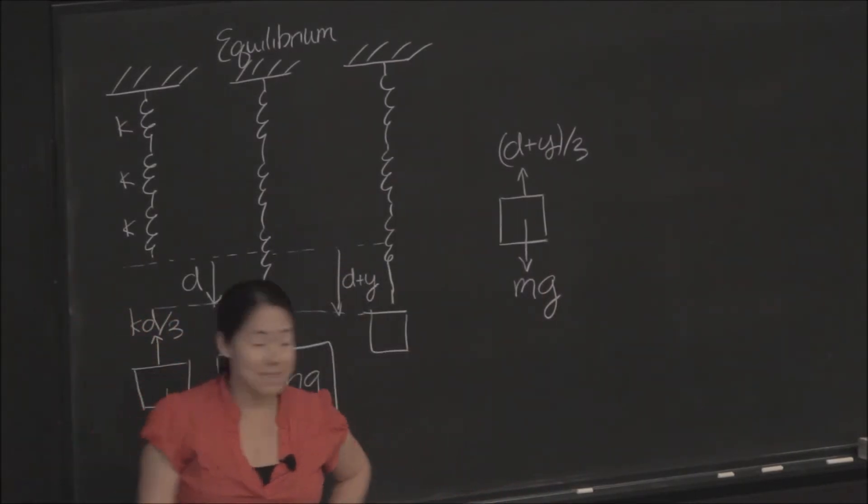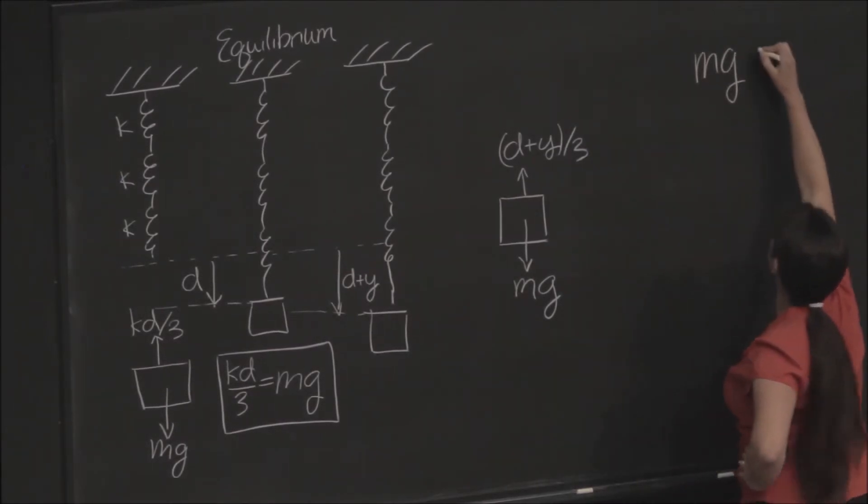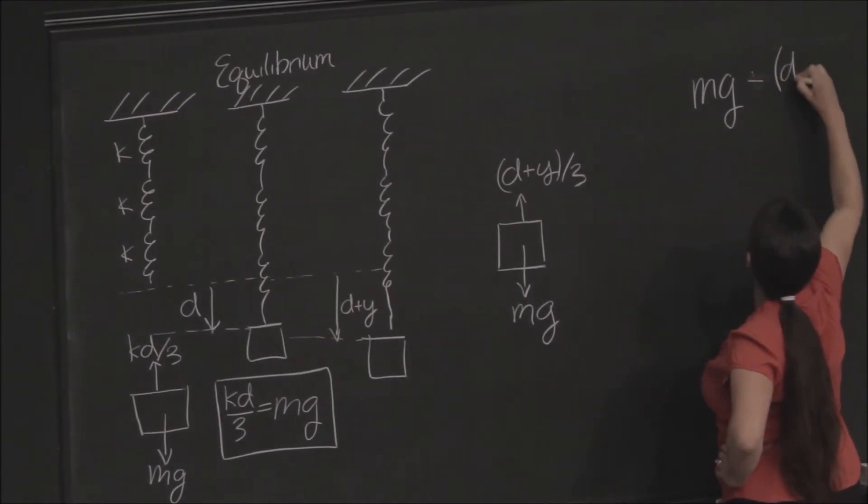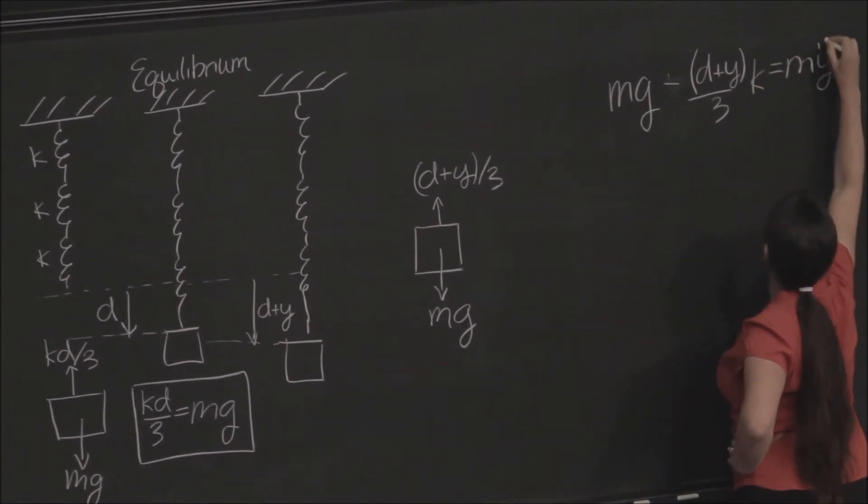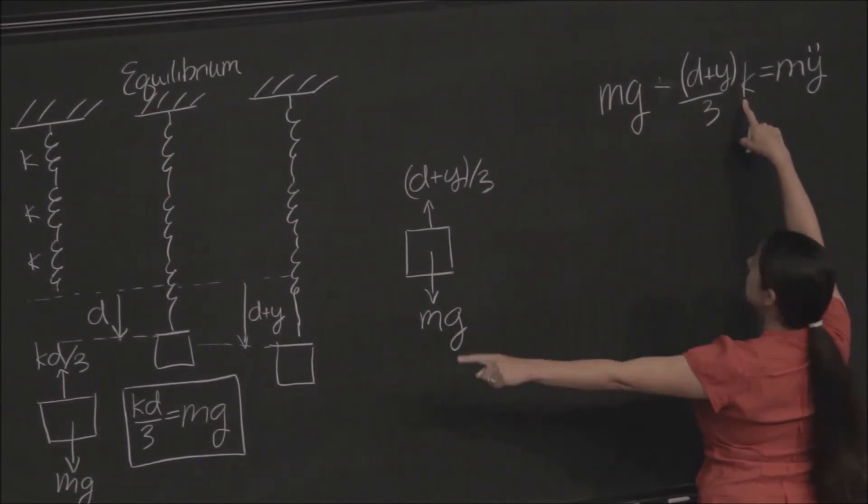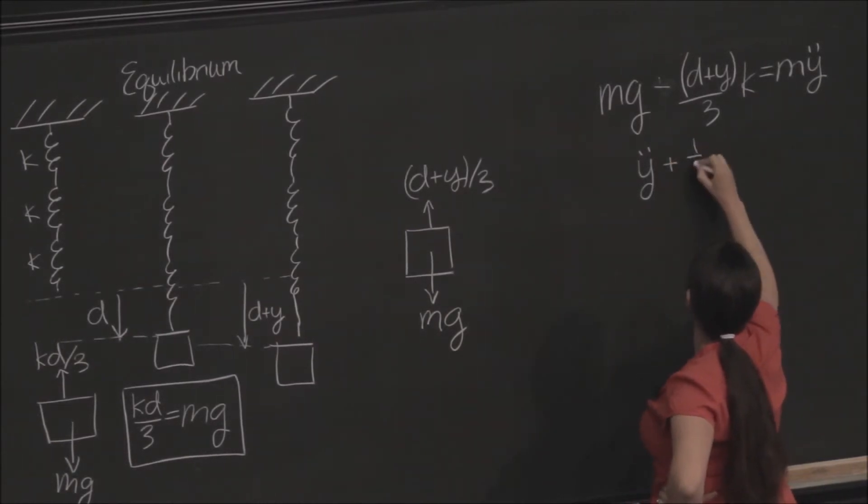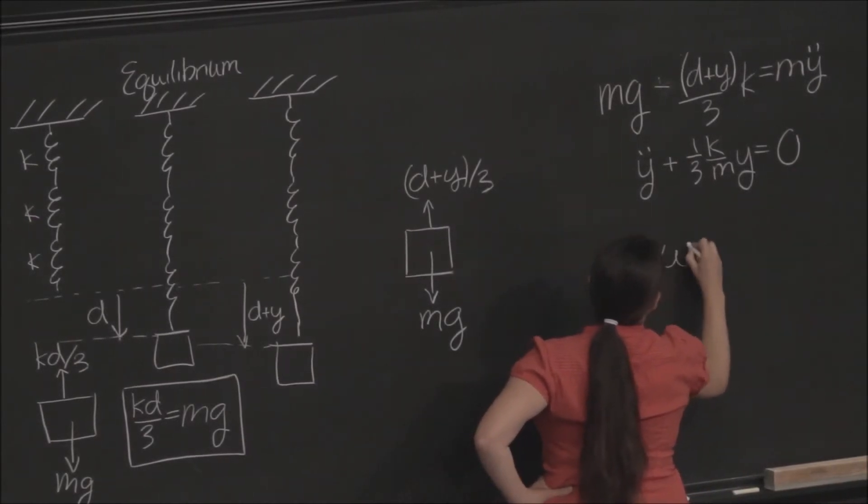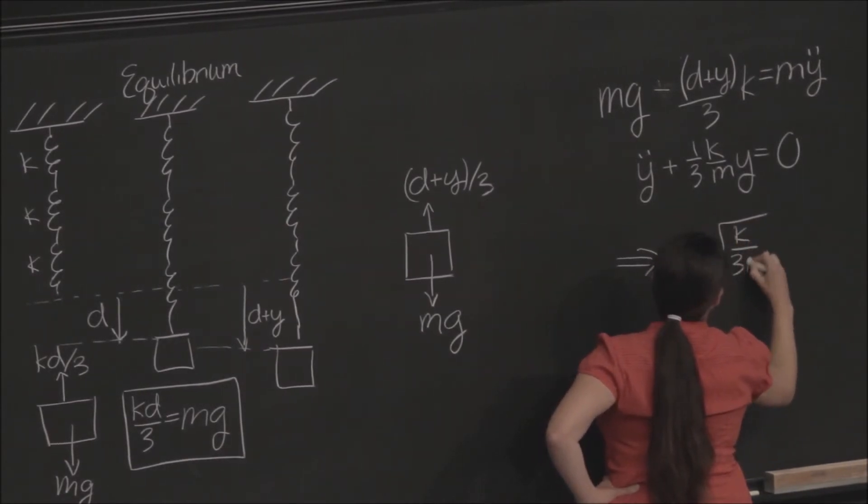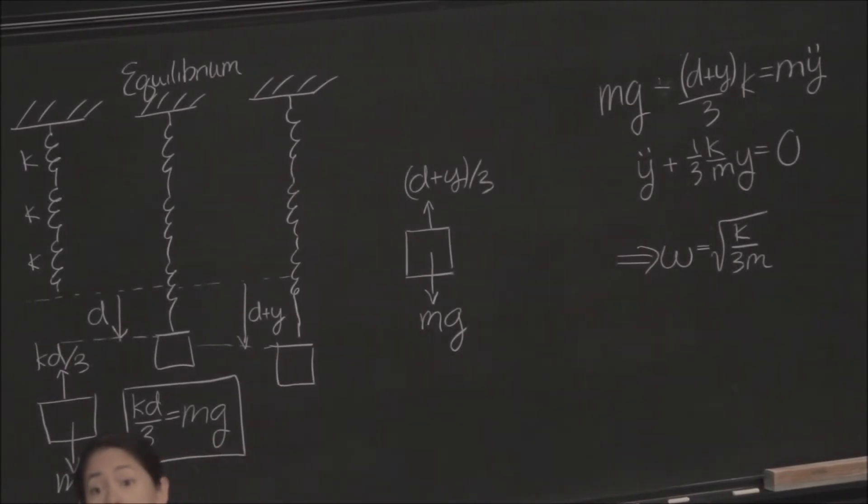force pulling up is going to be K times D plus Y over 3. Pulling down on it is MG. You can see if we do the exact same song and dance that we did right there, we're going to end up with minus K times D plus Y over 3 plus MG equals MY double dot. So, the KD over 3 and MG are going to cancel out. And we're going to end up with Y double dot plus 1 third K over M times Y equals 0. So, therefore, our omega decreased, and since we know that the period is 2 pi over omega, the period must have increased.